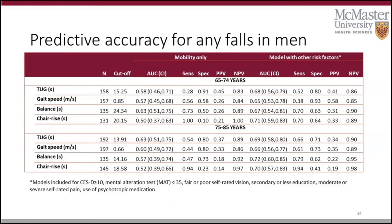Looking at predictive accuracy for one or more falls in men, we saw a similar trend to women. In men aged 65–74, AUC values ranged from as low as 0.50 (chance) up to the highest being achieved by the single leg balance test. In the 75-plus group, the TUG achieved the best accuracy but still below acceptable at 0.63. Importantly, when other risk factors were included in the models, AUC values improved to what we would consider acceptable for screening.